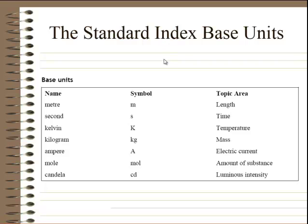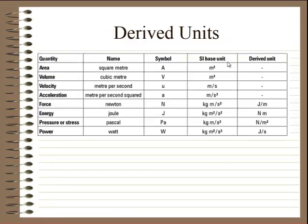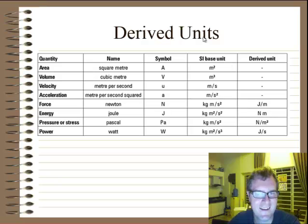Now, what we've got to think about here is that from these base units, we can derive every other type of unit which is available to us. So let's just look at some examples. Here, we can see area is obviously a combination of length in two different dimensions and volume in three dimensions.